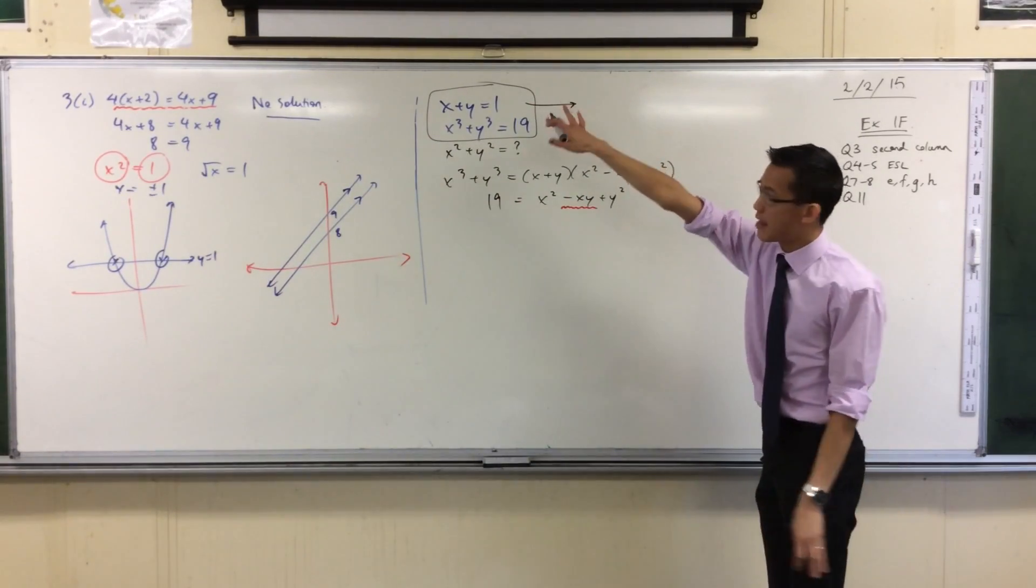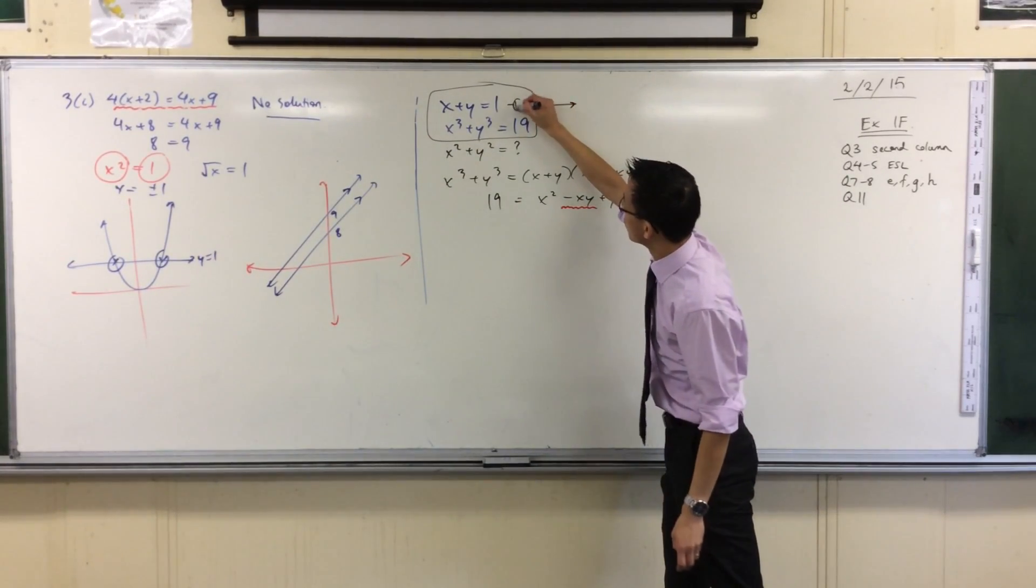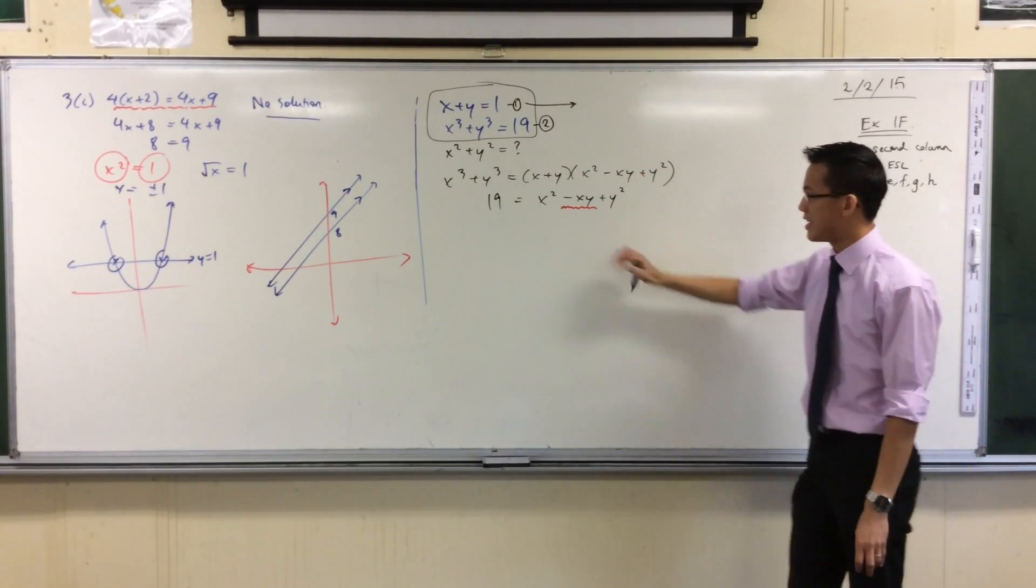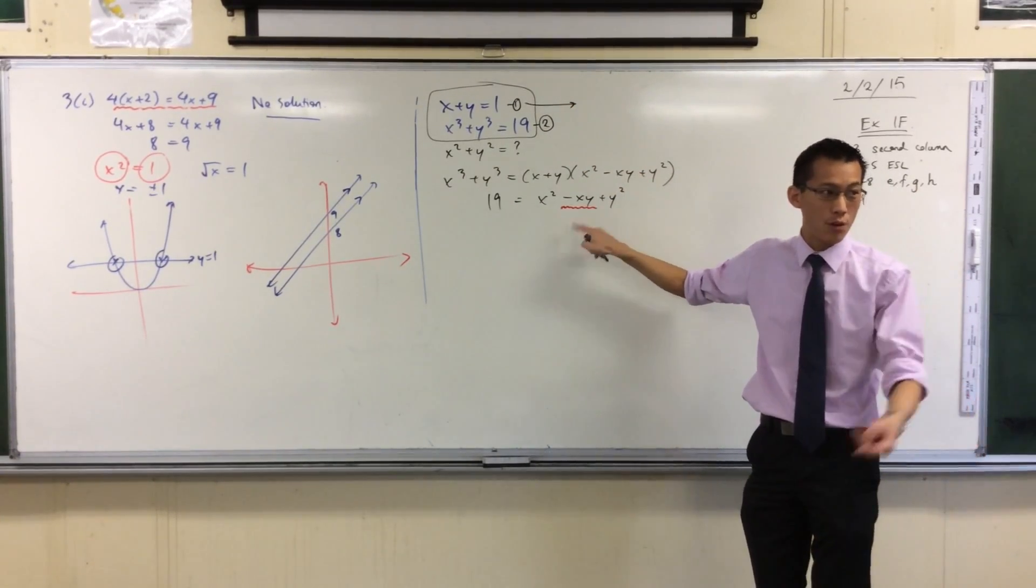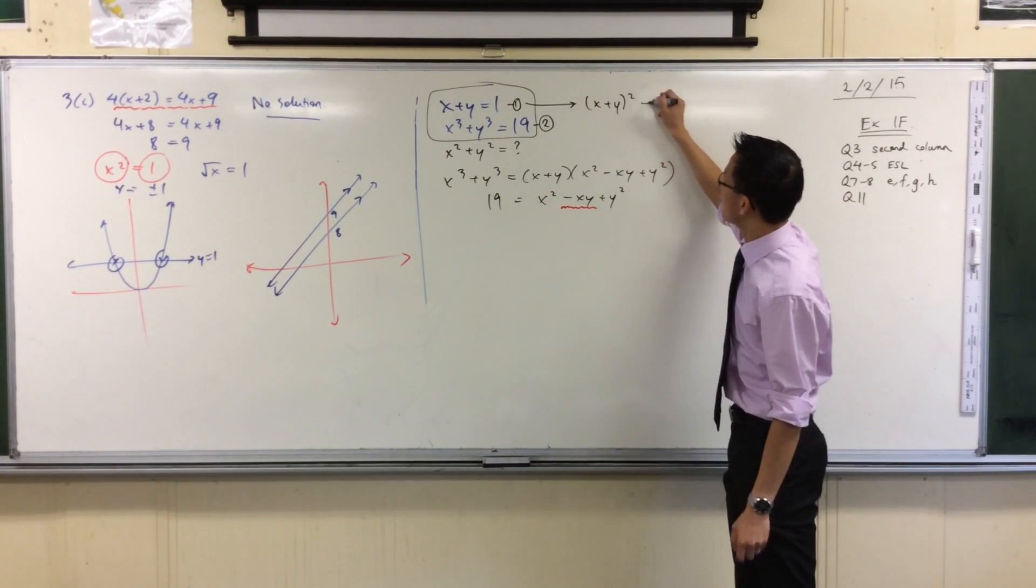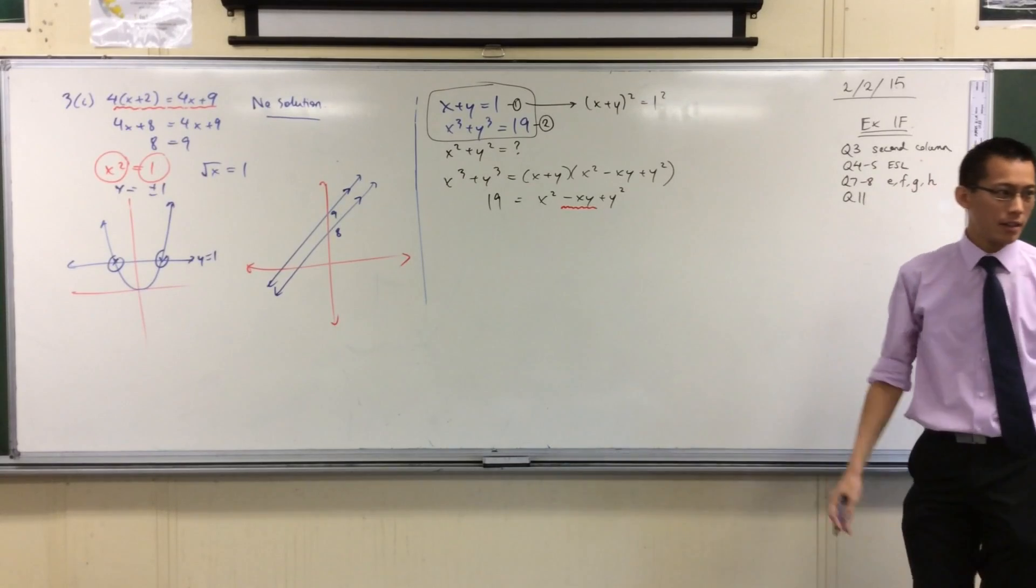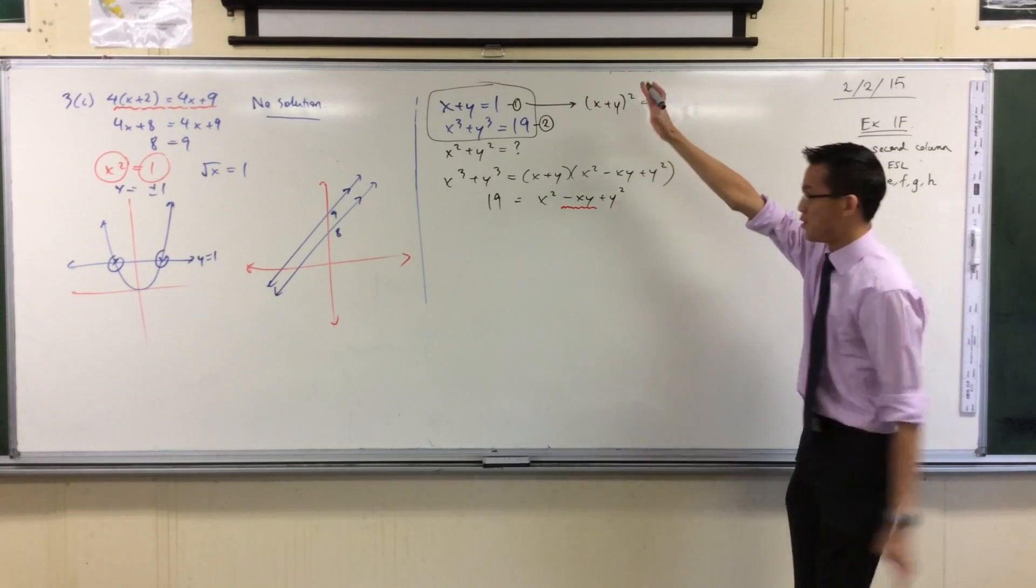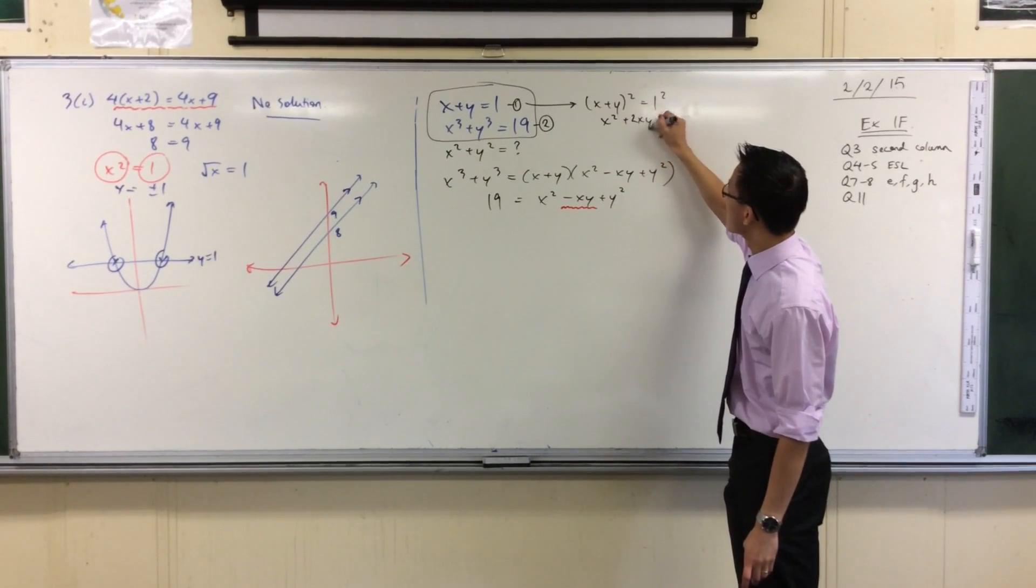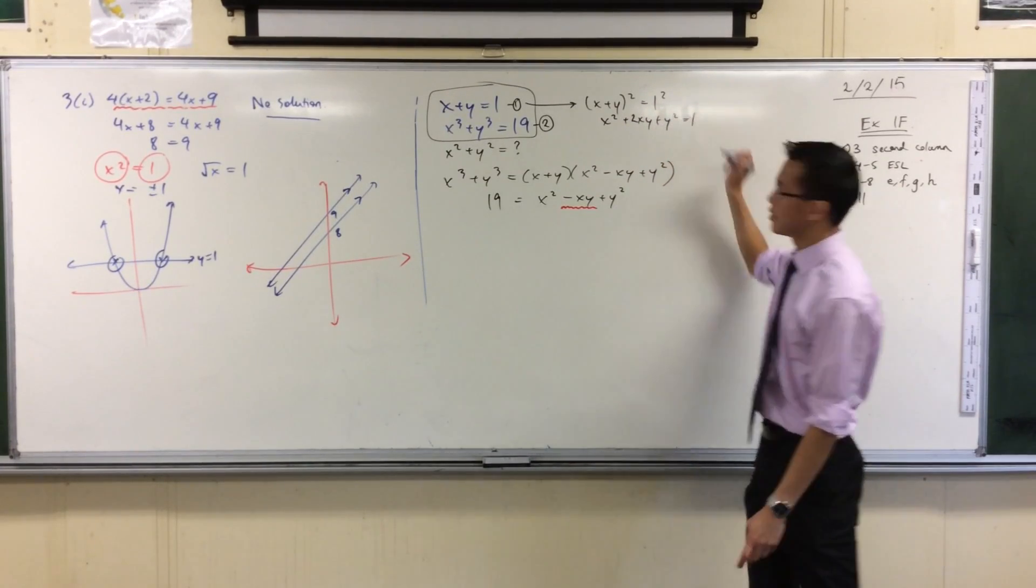So if I take that first line, right, let's call it equation one. I have already used it, but I need to use it again in a different form in order to overcome this xy. So I'm going to square both sides. Okay? So that's fine. But the reason why this is useful is because the xy is going to appear in the expansion. There it is.